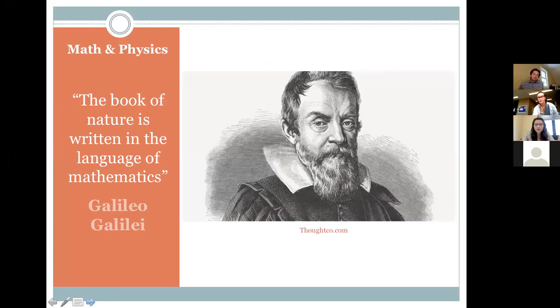The relationship between math and physics has been studied by mathematicians, physicists, and philosophers since antiquity. Galileo was one of the first to argue that math and physics are truly connected. He said, the book of nature is written in the language of mathematics. Their relationship is still believed to be greatly connected.